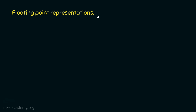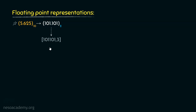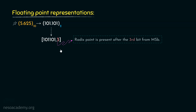Let's begin with floating point representations. Now in the previous session, we have already seen that the binary equivalent of the decimal floating point 5.625 is 101 radix point 101. Now in the early days of computation, this particular value would have been saved in the computer's memory by keeping the entire number without the radix point, and thereafter setting this offset as 3. This 3 actually means that the radix point is present after the third bit from MSB.